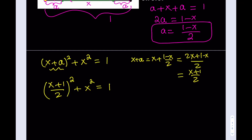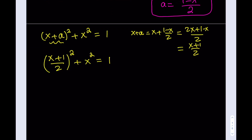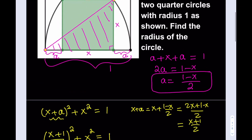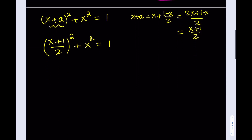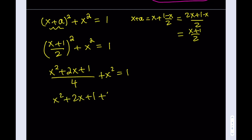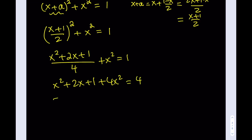Now this should be an easy equation — it's quadratic, so we can use the formula. Let's go ahead and expand it. If you expand this, you get x squared plus 2x plus 1 divided by 4, plus x squared, equals 1. Let's multiply everything by 4. That gives us 4x squared plus 8x plus 1 plus 4x squared equals 4. Combining like terms and putting everything on the left-hand side: 5x squared plus 2x minus 3 equals 0.